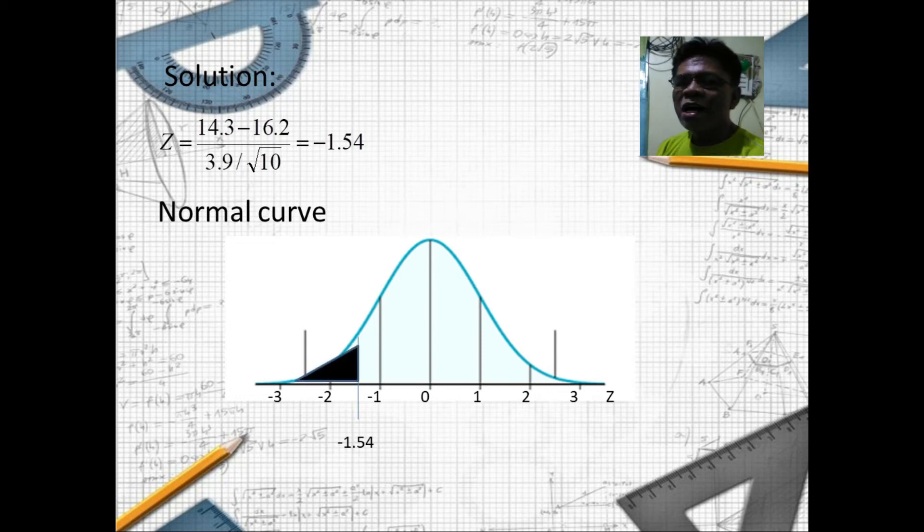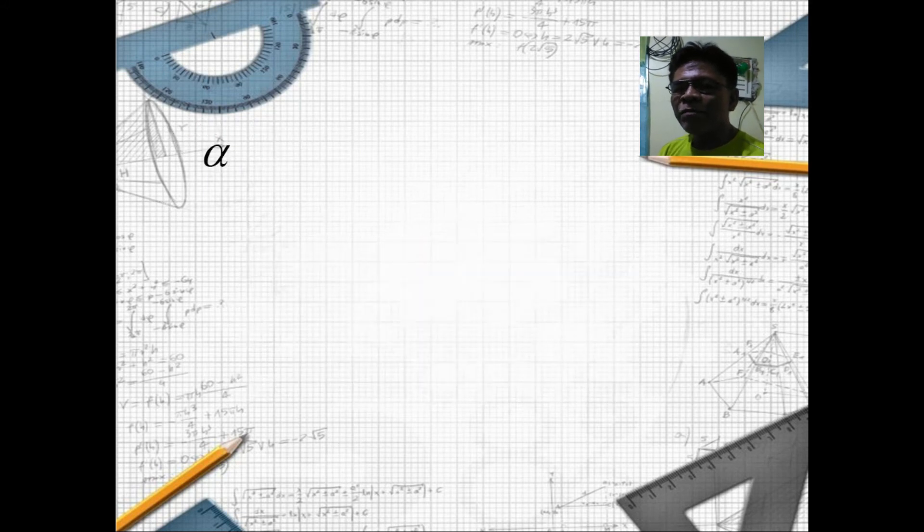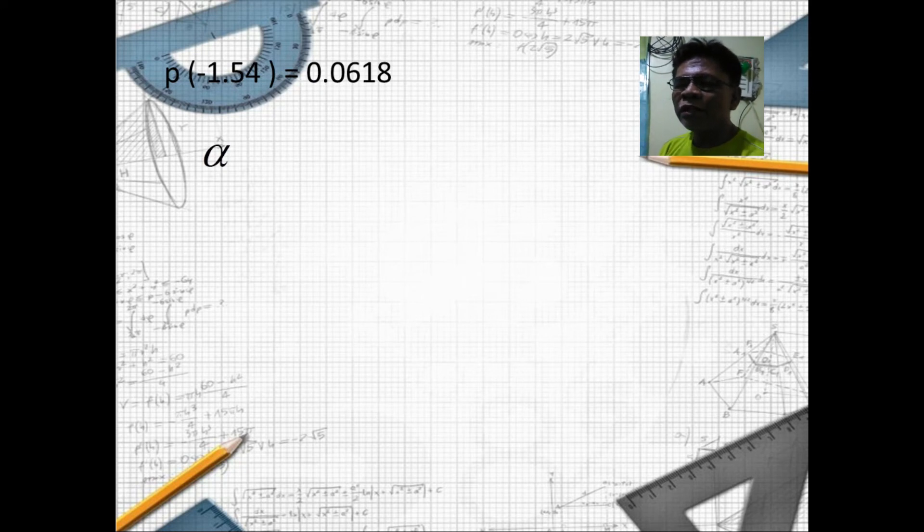The shaded region is the p-value or the probability value. Our probability value equals negative 1.54, and that is equivalent to 0.0618. 0.0618 is found in the z-table for negative 1.54.